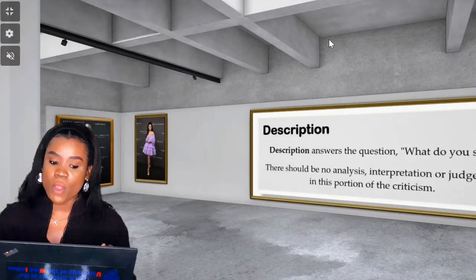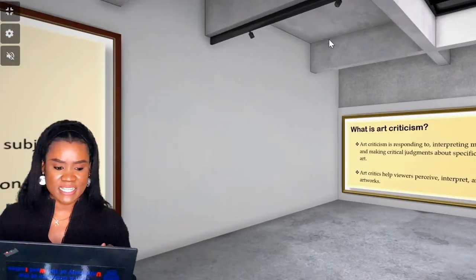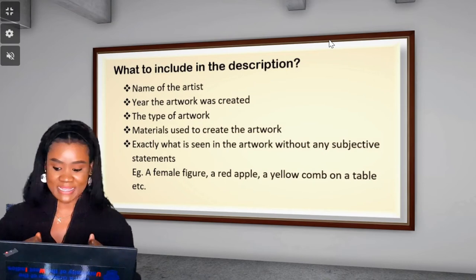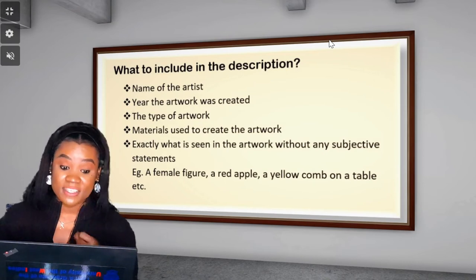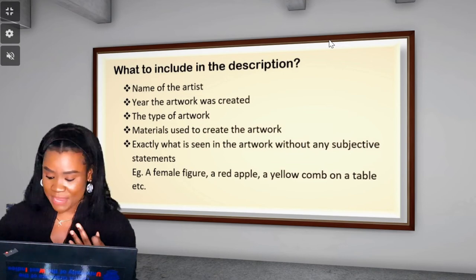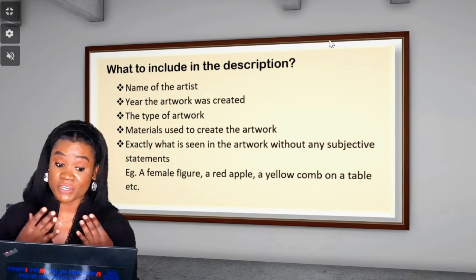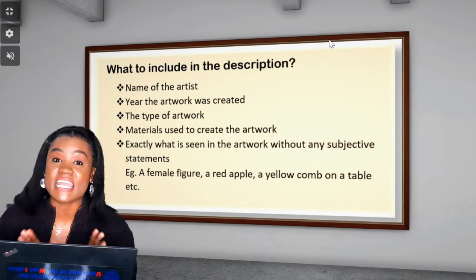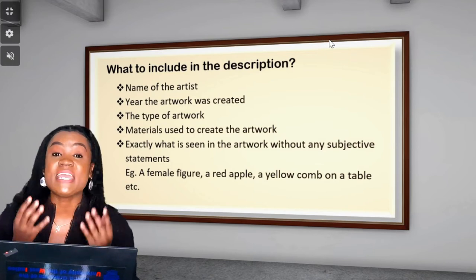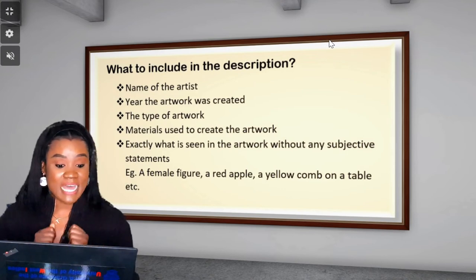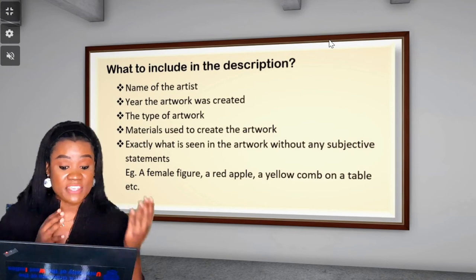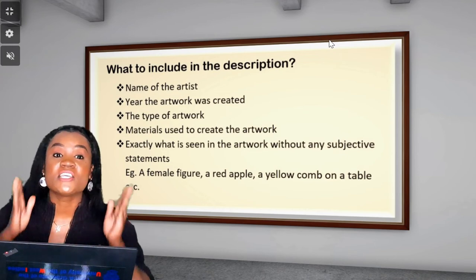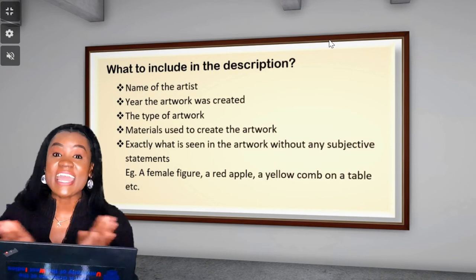Now, what is involved in the description? Here is what to include: the name of the artist, the year the artwork was created, the type of artwork, the material used to create the work of art, and exactly what is seen in the artwork without any subjective statements — meaning do not add your opinion at this stage. For example, you're going to say: I see a female figure, a red apple, a yellow comb on a table. Simply stating what you see without any meaning.